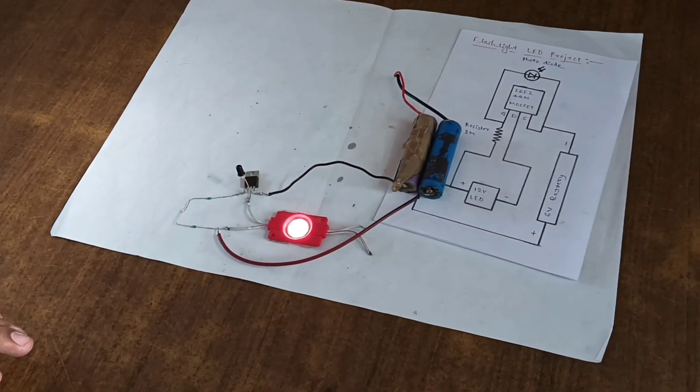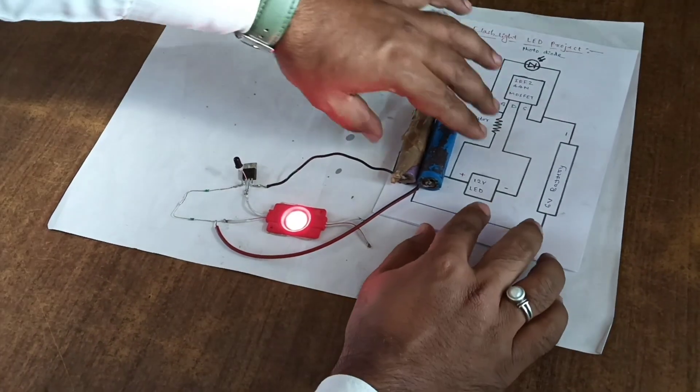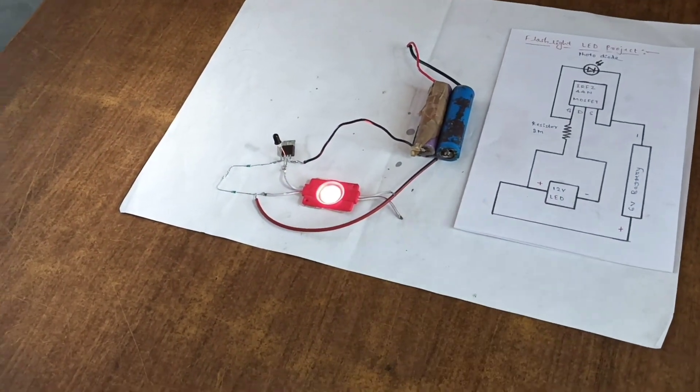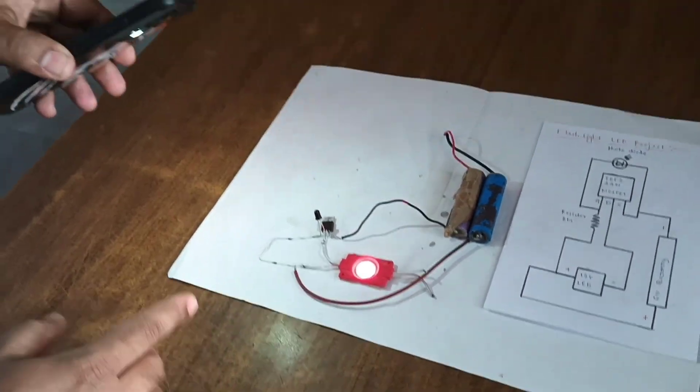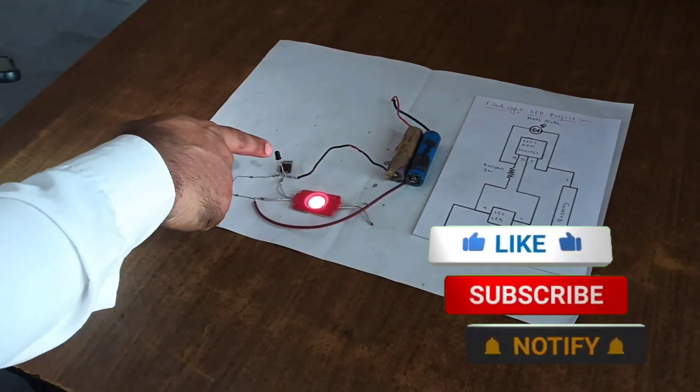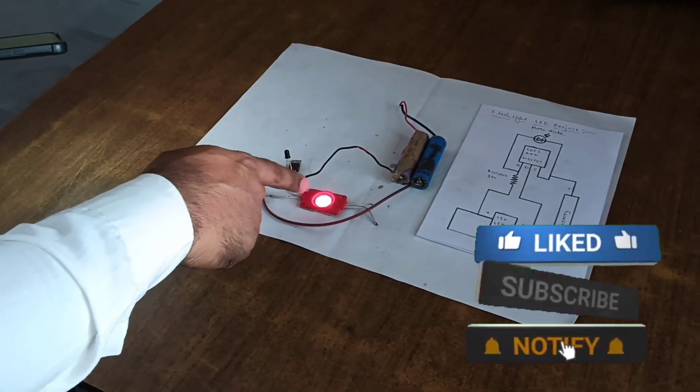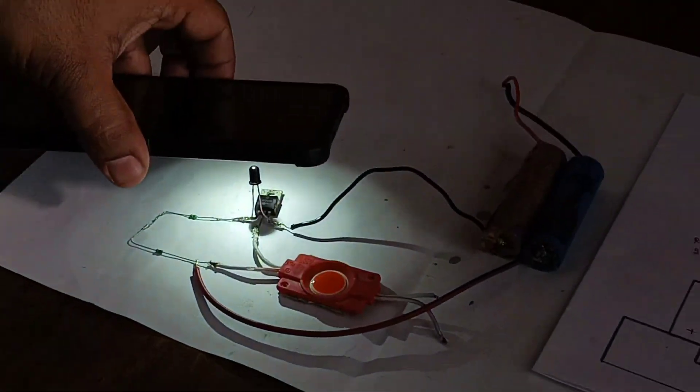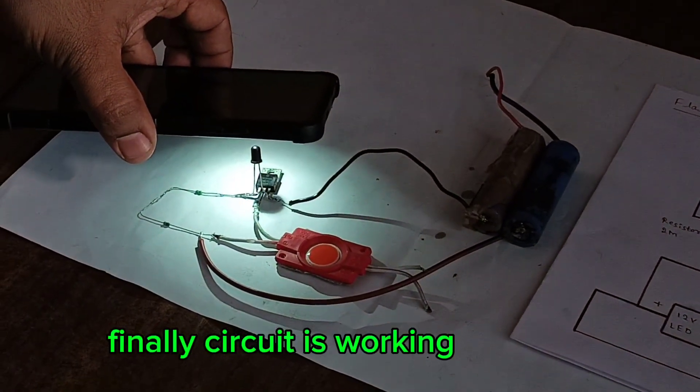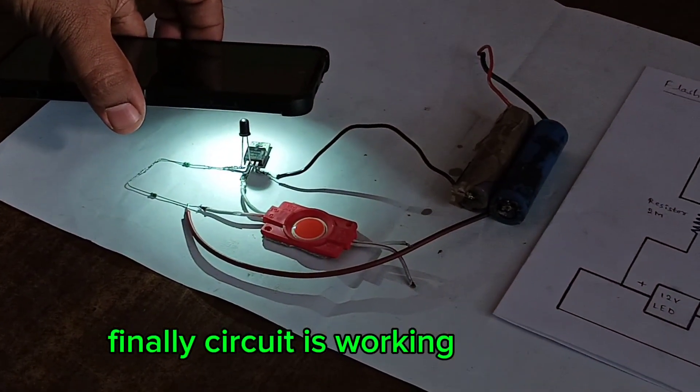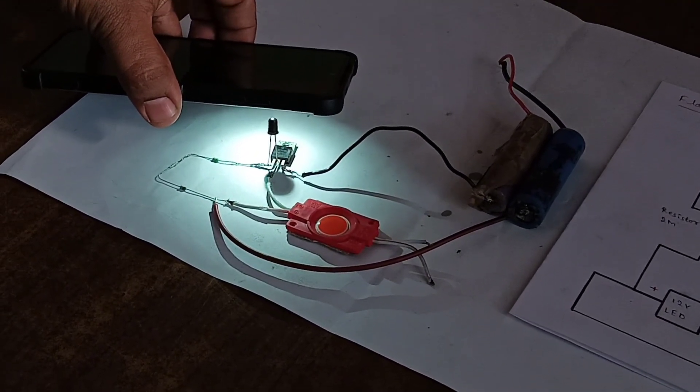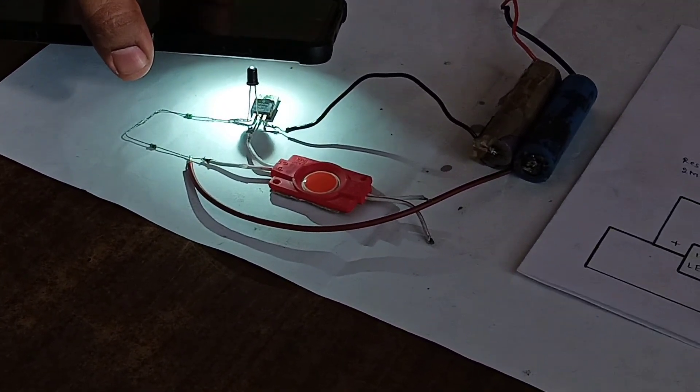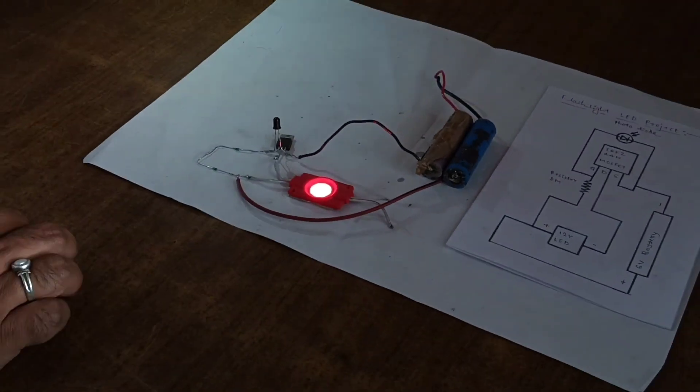Let's test the circuit using mobile flashlight. When flashlight falls on this photodiode, the LED will be off. You see here, when flashlight falls on photodiode LED is off. When we remove flashlight from photodiode, LED glows.